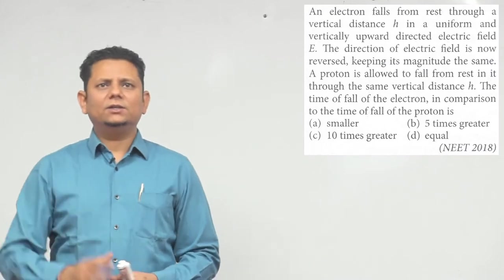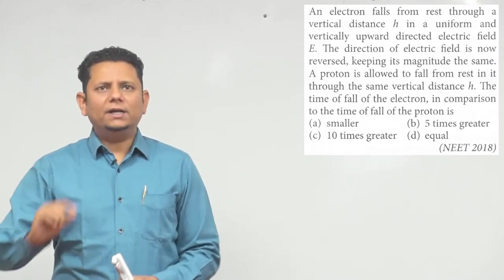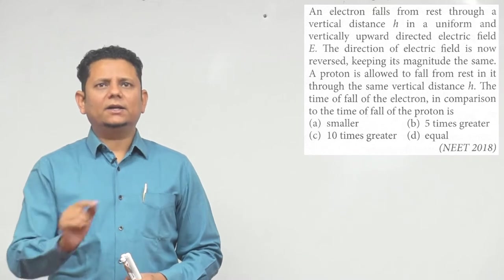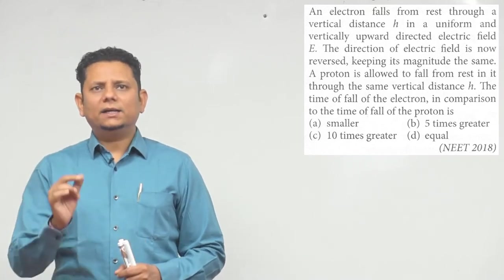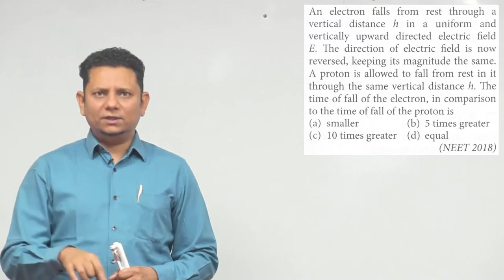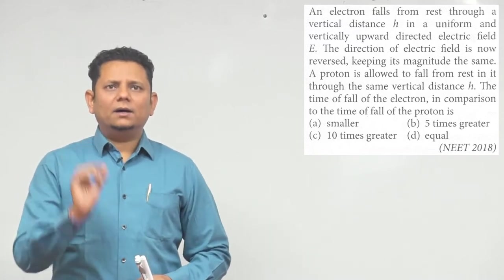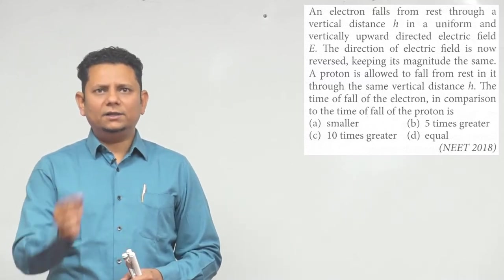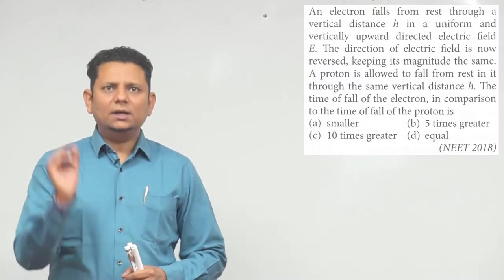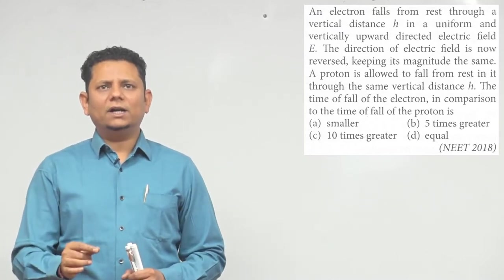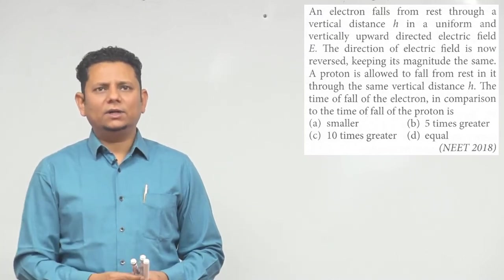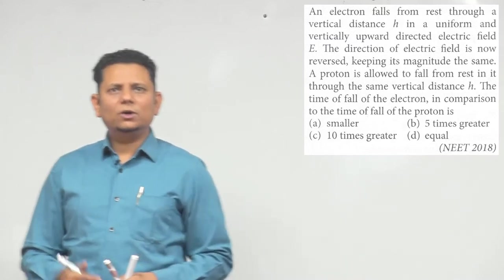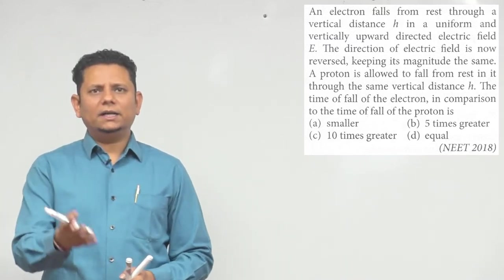2018 question: An electron falls from rest through a vertical distance H in a uniform, vertically upward directed electric field E. The direction of the electric field is then reversed keeping its magnitude the same, and a proton is allowed to fall from rest through the same vertical distance H. The time of fall of the electron in comparison to the time of fall of the proton will be — smaller, five times greater, ten times greater, or equal?